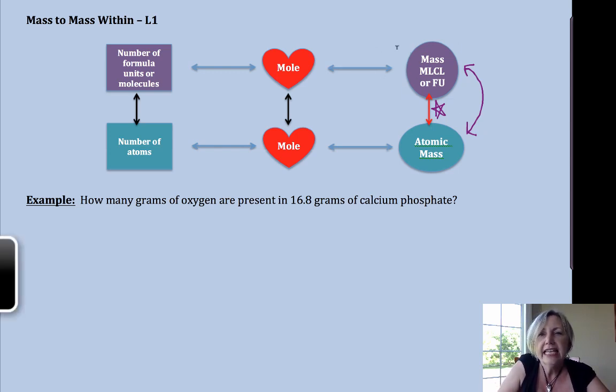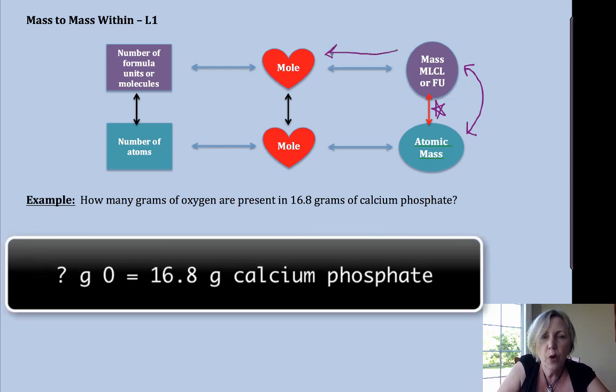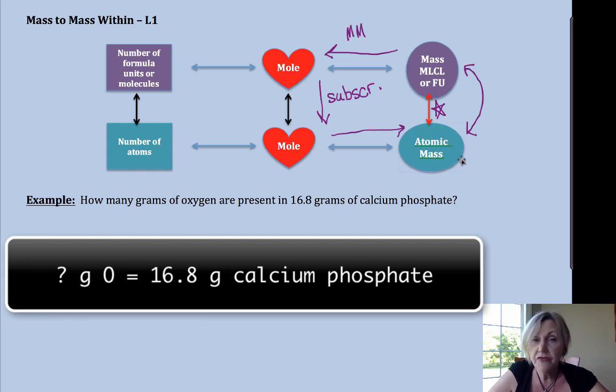Now it is possible to go mass to moles using molar mass, moles to moles using subscripts because we're talking about an atom within a compound, so we would use subscripts, and then moles to mass again using molar mass. That's fine, hopefully you can kind of process that one, because here I'm going to be focusing on doing it in the one-step method.